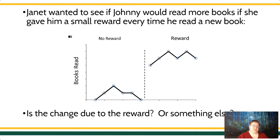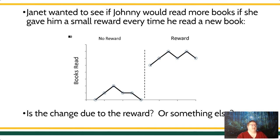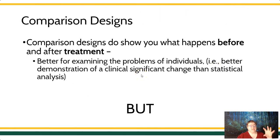In the reward condition, we saw six, seven, eight, seven, eight, seven — a pretty big increase, a pretty powerful demonstration of the number of books being read. Is this change due to the reward, or is it due to something else? In a comparison design, it's very difficult to tell. A comparison design is a very weak design. The problem is that it shows you what happened before and after treatment, and it can be really good because you can see what happens as a result of the treatment.